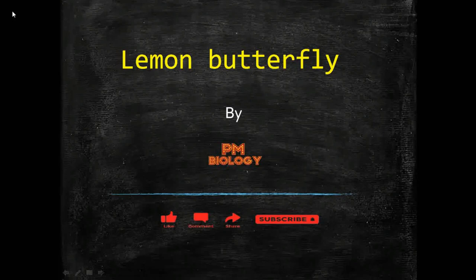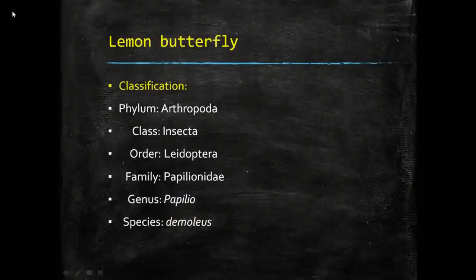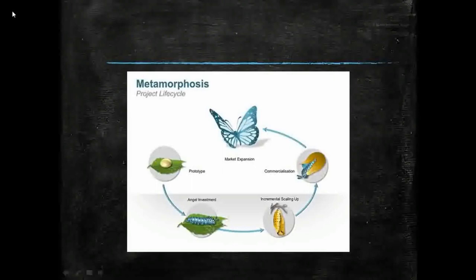Welcome to PM Biology. In this video we will learn about the lemon butterfly, its lifecycle, nature of damage, and control measures. It is classified under phylum Arthropoda, class Insecta, order Lepidoptera, family Papilionidae, genus Papilio, and species name is demolius.